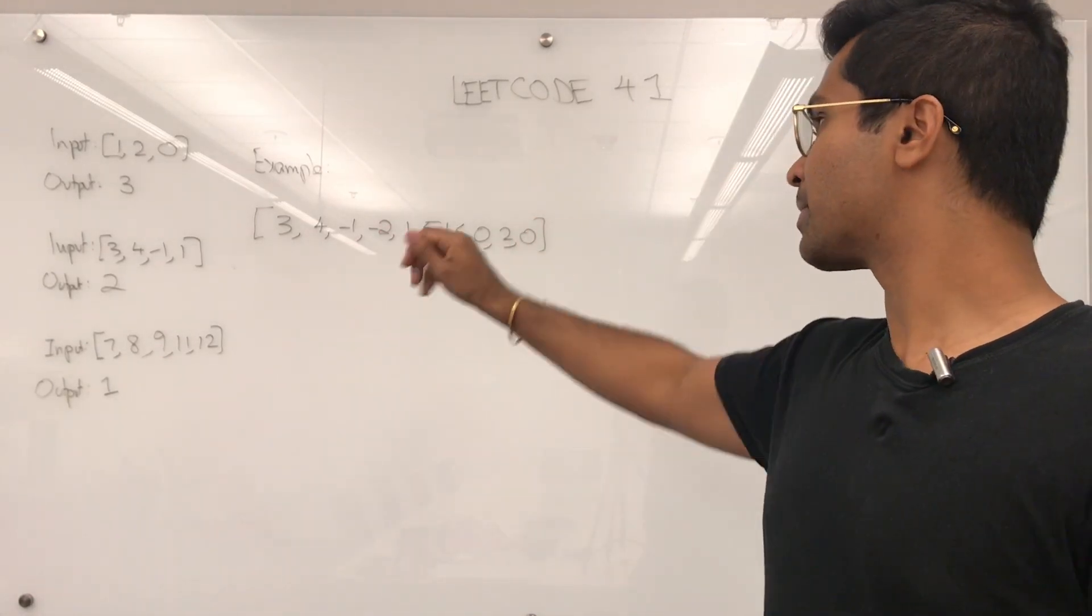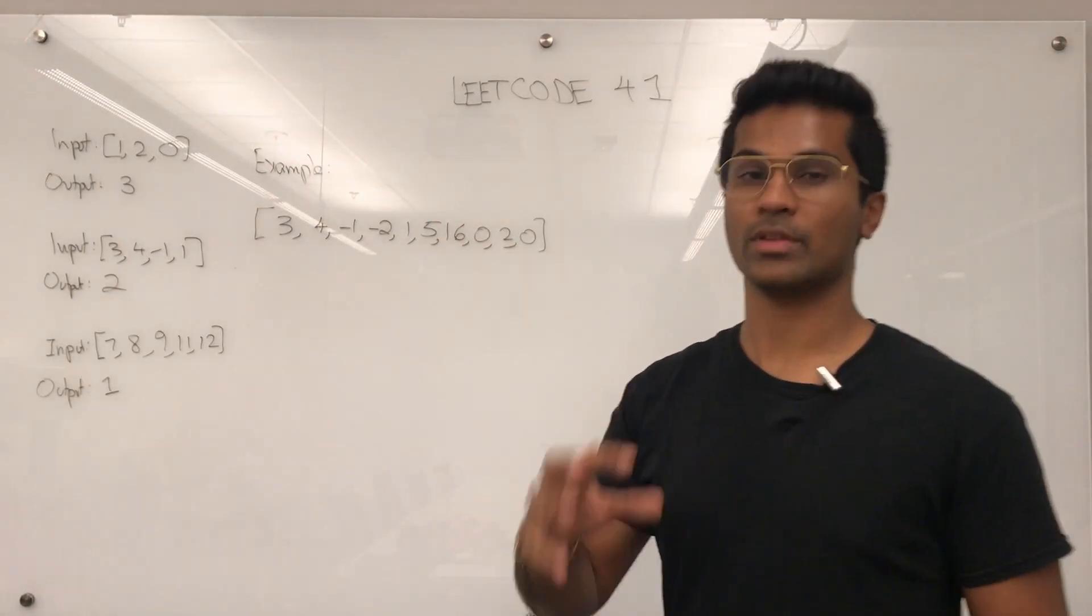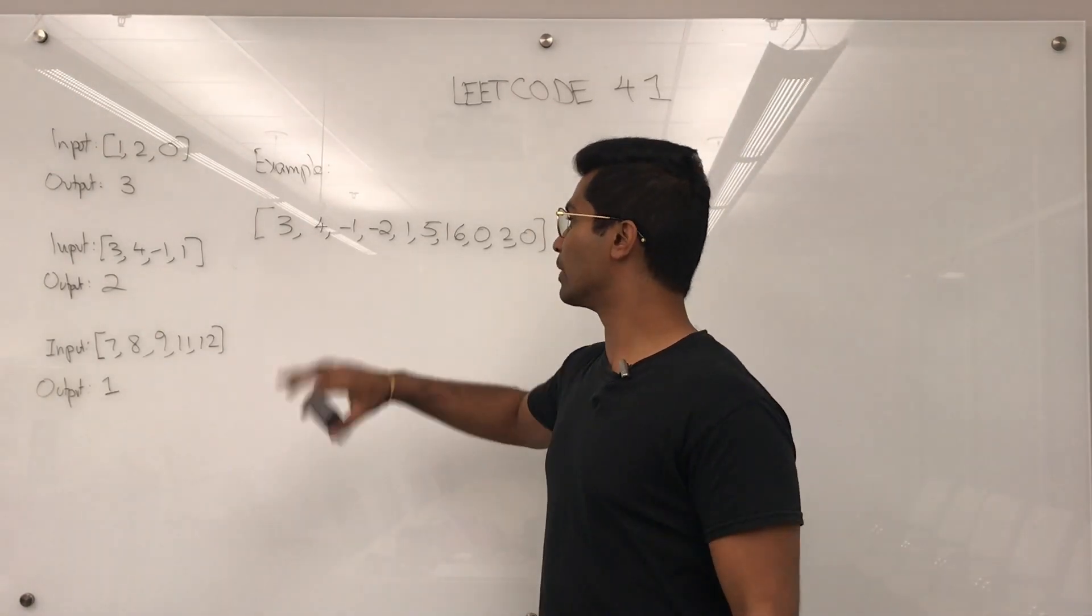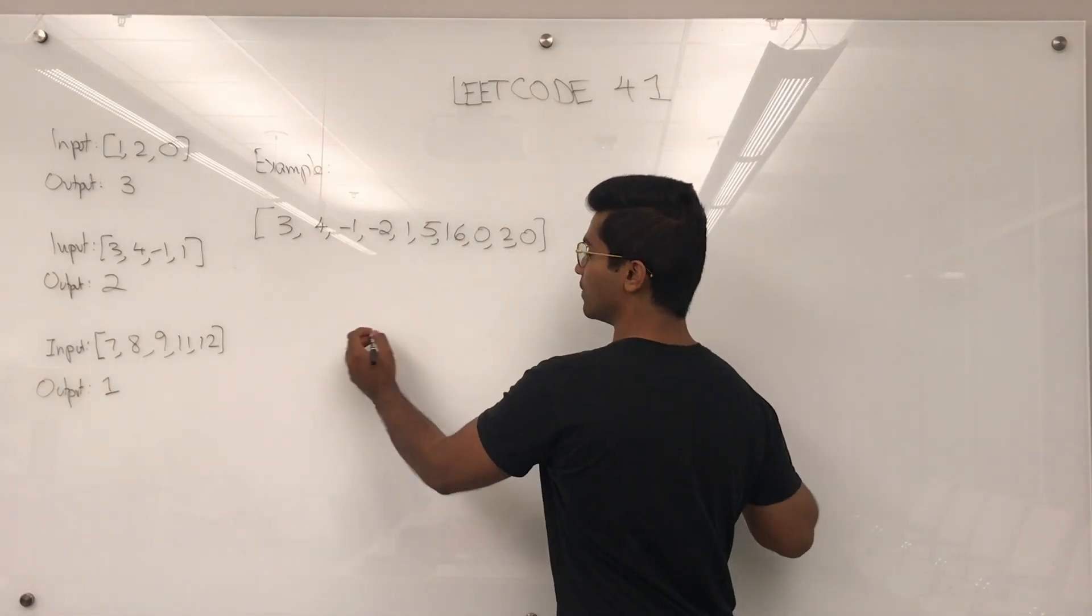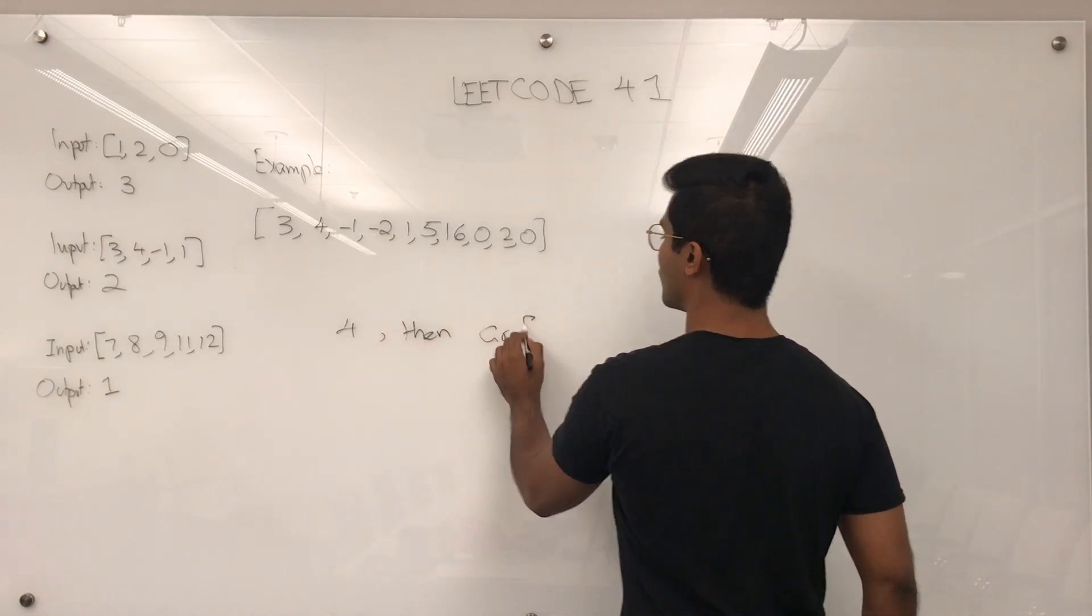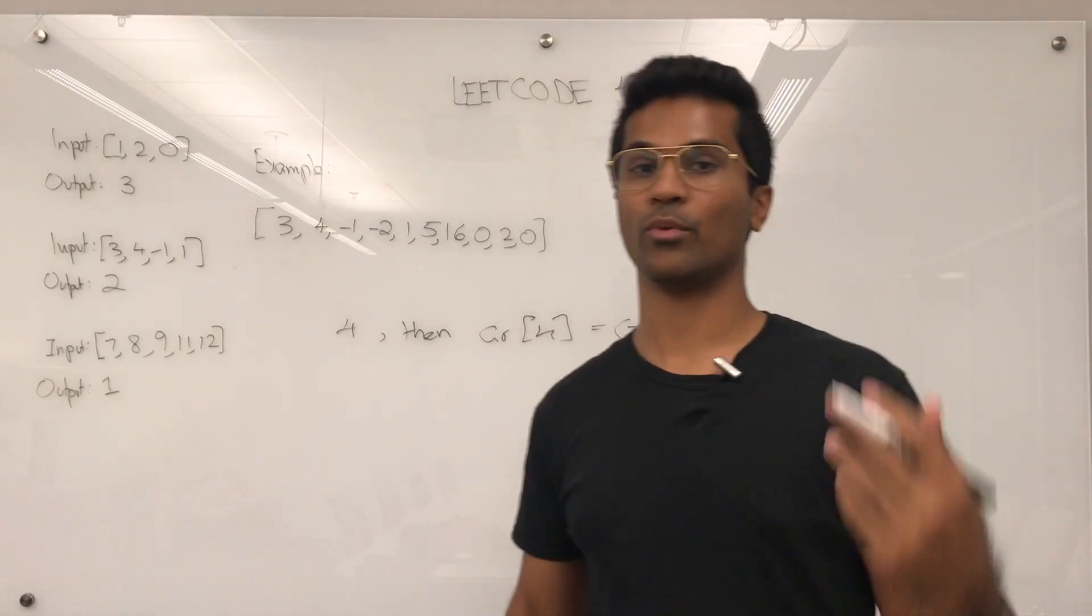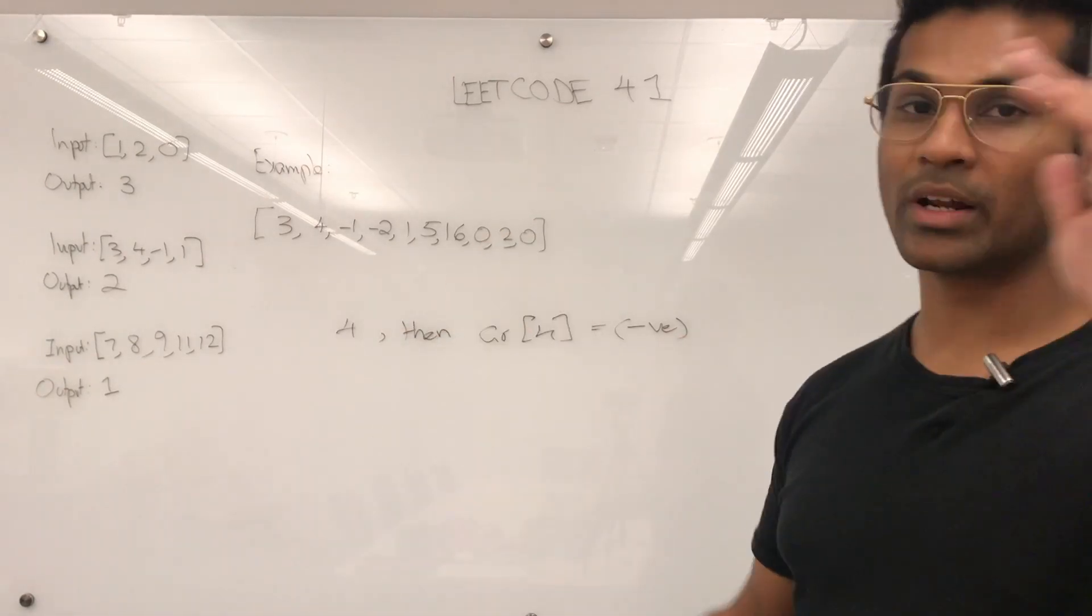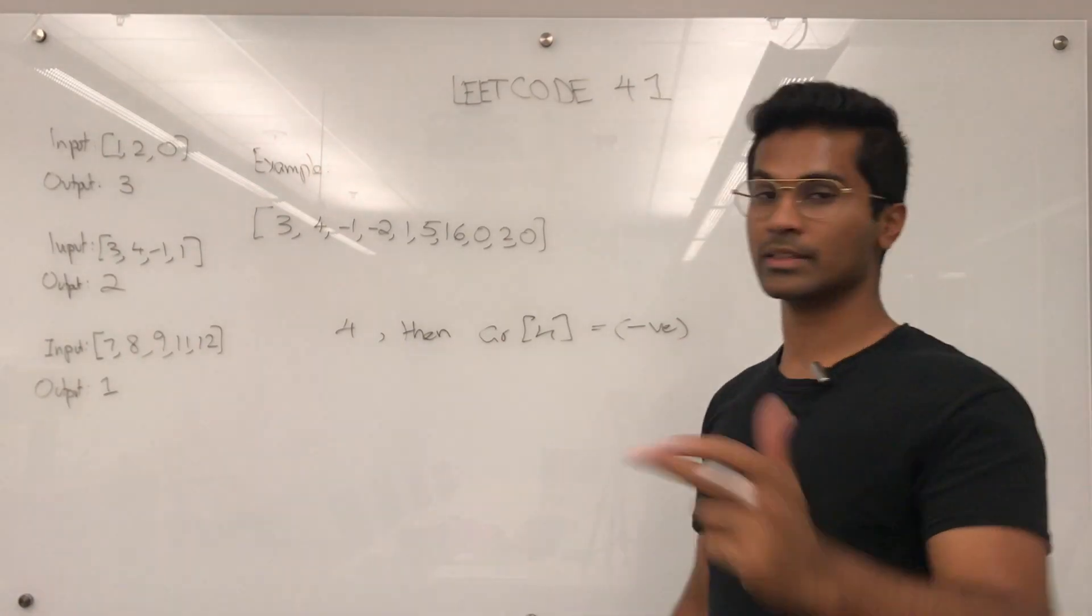Once we're done with that, what we're going to do is make the values negative for every number that we see. For example, if we see a number 3 or if we see number 4, we have to make the value at that index negative. So for example, if I see 4, then I have to make array of 4 negative. And we have to only make it negative once. Basically, making it negative is our way of saying we've seen that. Let's get into the code.